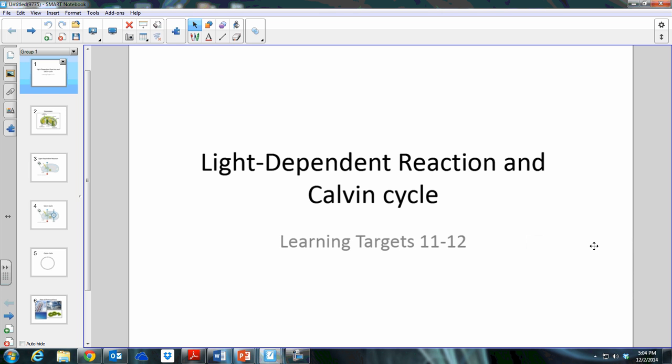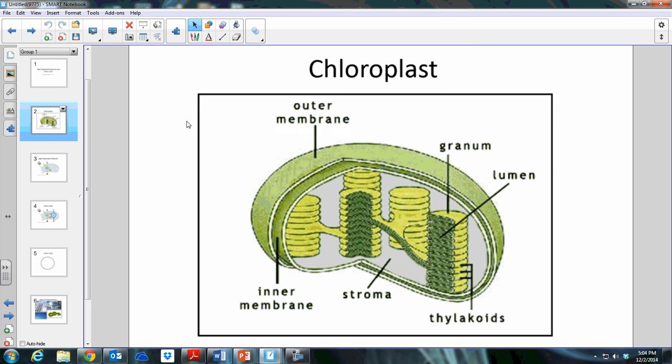This lesson is for learning targets 11 and 12: light-dependent reaction and Calvin cycle. The chloroplast is where photosynthesis takes place. This is an organelle located in plant cells. Chloroplasts have their own DNA, their own ribosomes, and a double membrane, which suggests that at one time they were their own organism. This is the endosymbiosis theory that we discussed in our evolution unit.